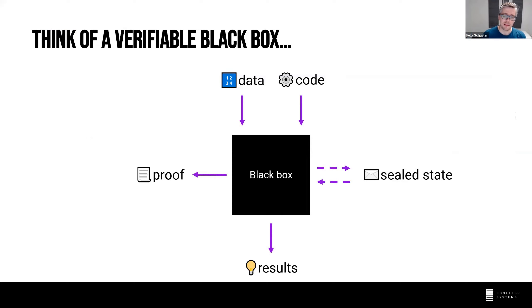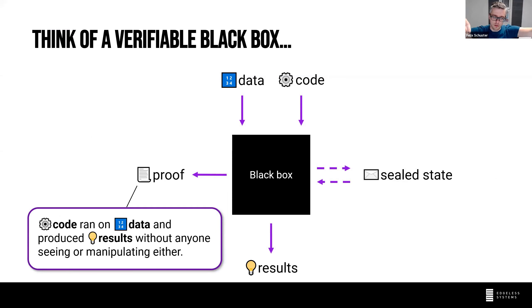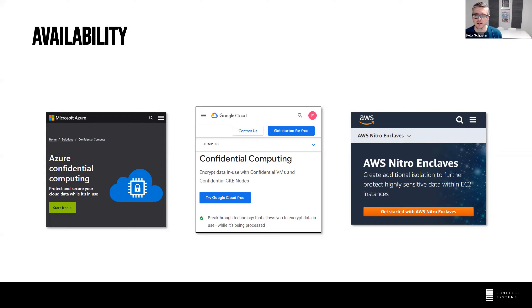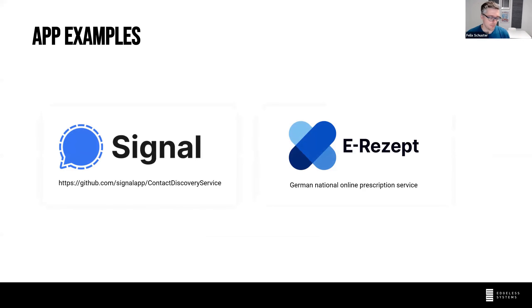If that explanation was too abstract, just think of an enclave as a super secure black box — you put code and data in, and the black box generates proof that it ran your code on your data and produced certain results, and it can also seal some state. Availability is quite broad: Azure has Intel SGX and AMD SEV CPUs with some interesting apps, Google has something, and AWS has something proprietary called Nitro Enclaves — not as secure as Intel SGX but a good starting point.